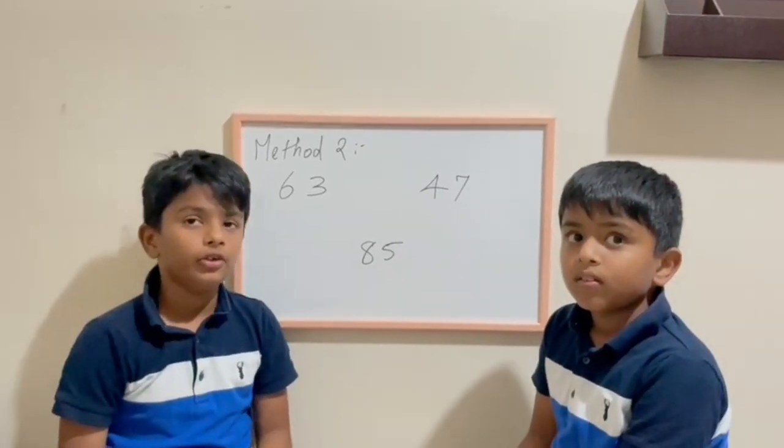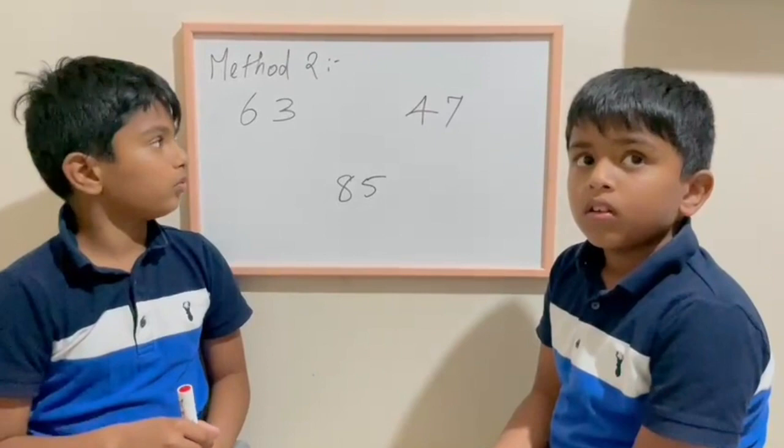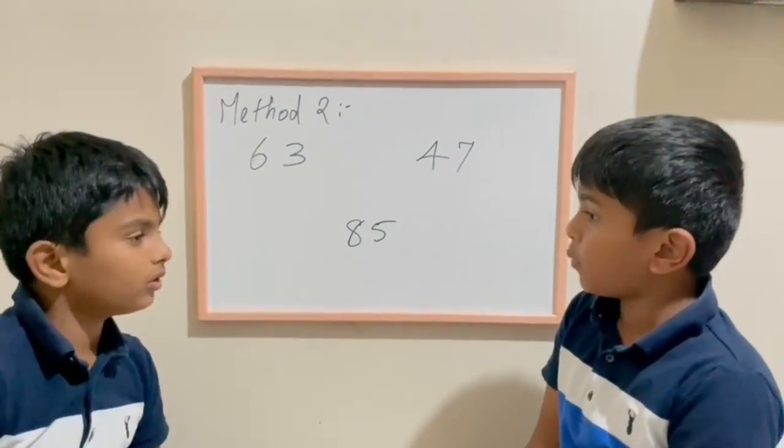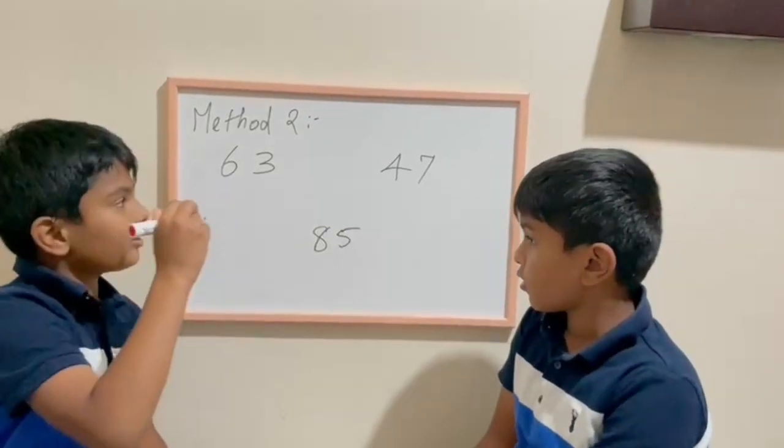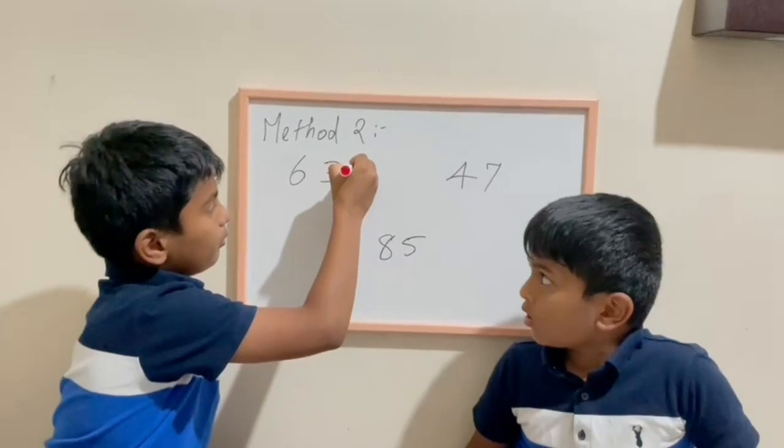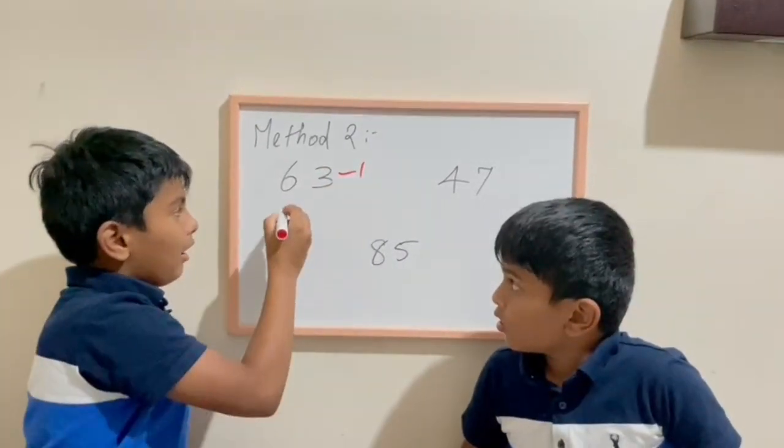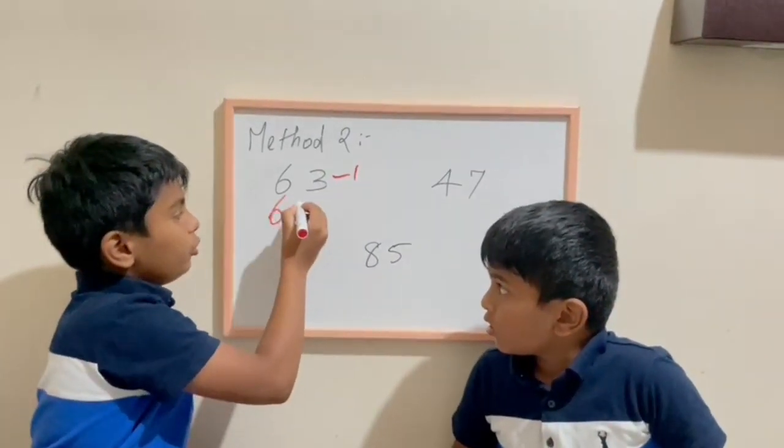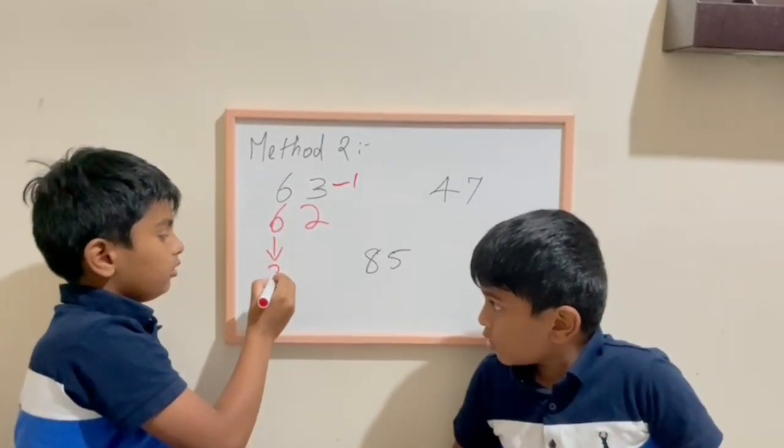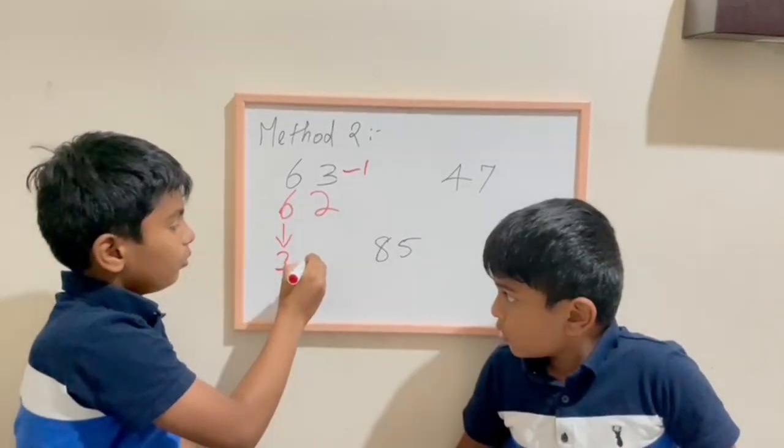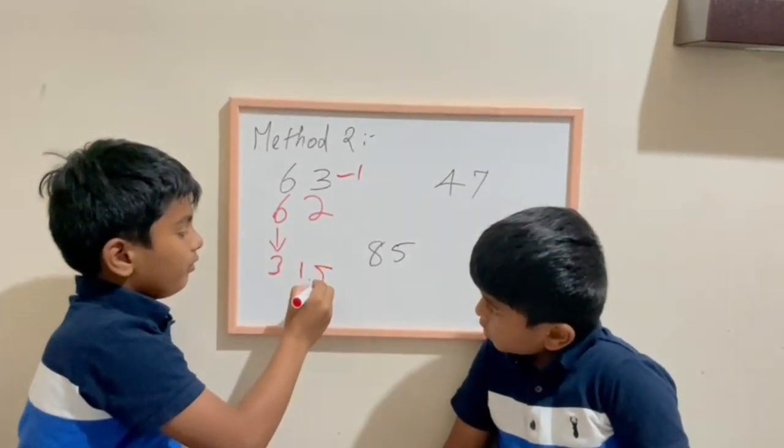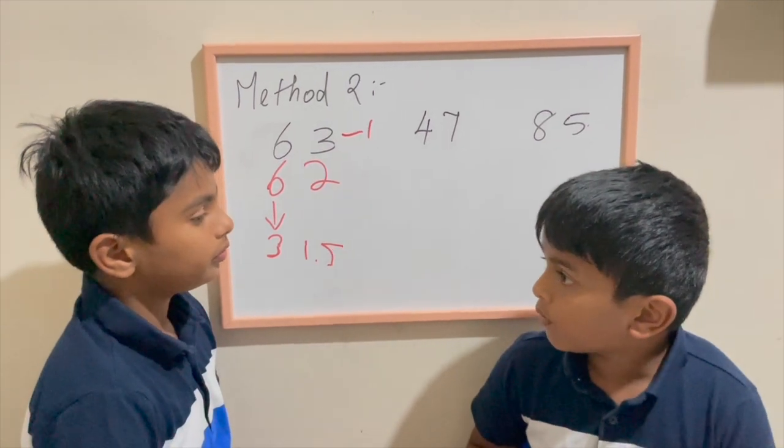Halving method 2: for example, 63 half. Brave, can you tell me the answer for 63 half? 31.5. Correct. The trick is, if the last number is an odd number, the trick is 63 minus 1, that would make 62. 62 half, you know the trick from method 1.